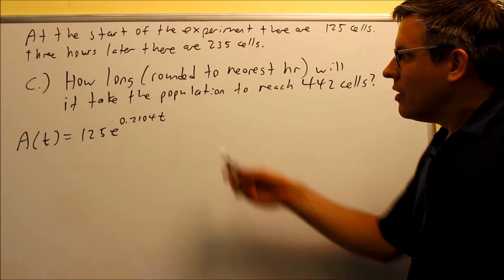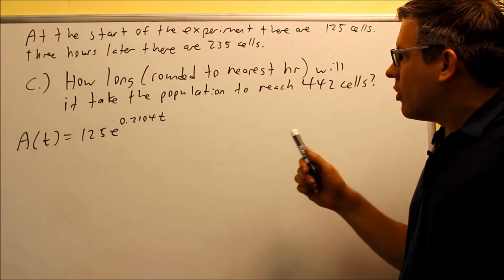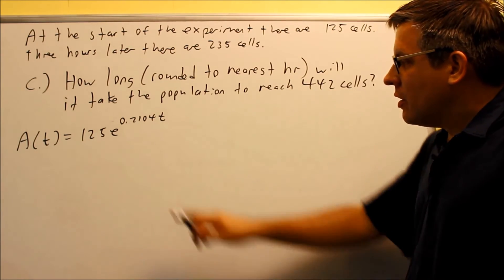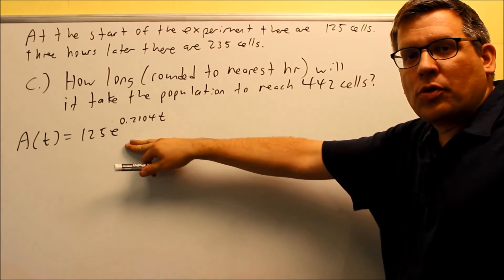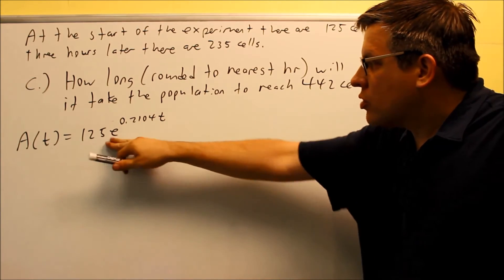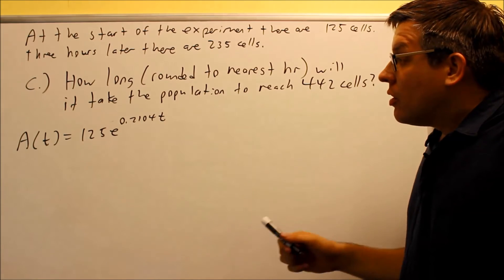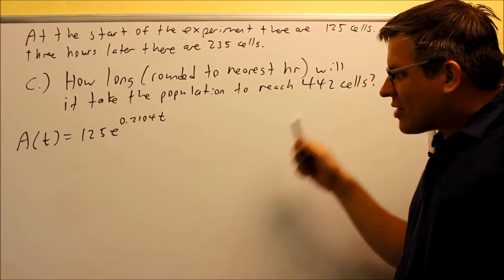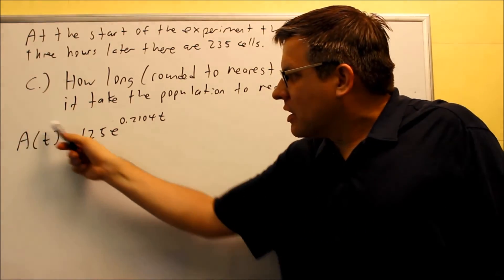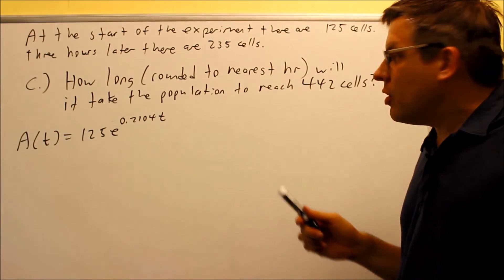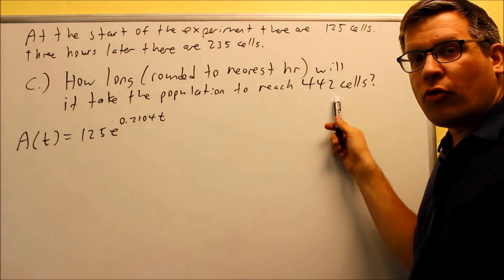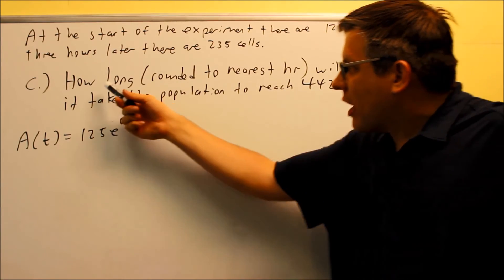Okay, part c, how long, rounded to the nearest hour, will it take the population to reach 442 cells? We're still going to use the same formula we've been using for all our parts, 125e to the 0.2104t. This time, the number that they give us, 442, that's going to be what we're going to put in after the equal sign. That would be the growth after a certain amount of time. That's what it grows to, 442. And it's also asking us, it says, how long rounding the nearest hour? That means we're actually trying to solve for the time.